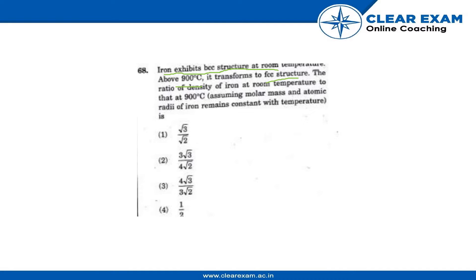The ratio of density of iron at room temperature to that at 900 degrees Celsius, and we are assuming that the molar mass and the atomic radii of iron remain the same with temperature.